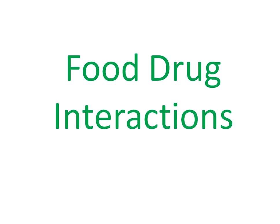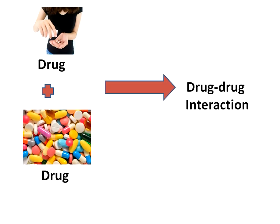Hello friends. Before starting drug-food interaction, let's be clear about drug-drug interaction, drug-food interaction, and drug-disease interaction. Drug-drug interaction is a change in a drug's effect on the body when the drug is taken together with a second drug. For example, mixing a sedative and an antihistamine can make you sluggish and make driving or operating machinery dangerous.